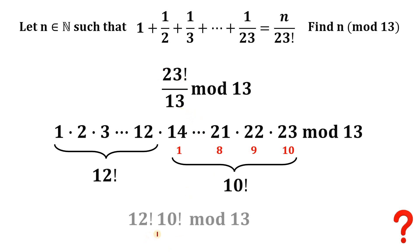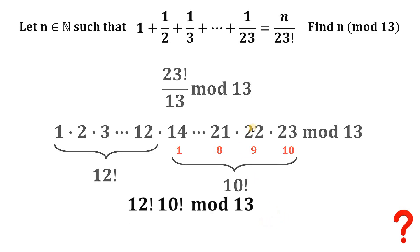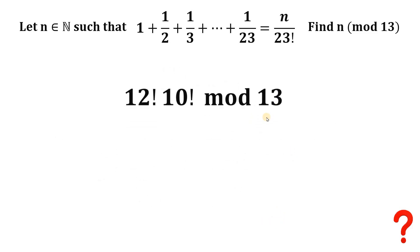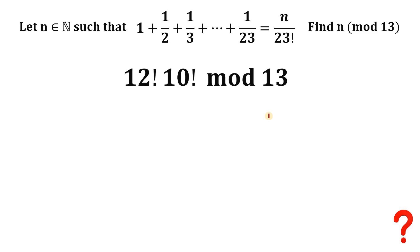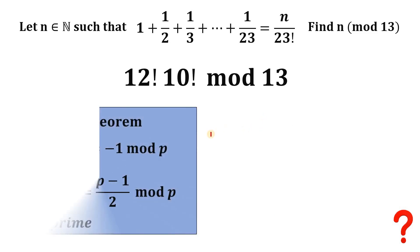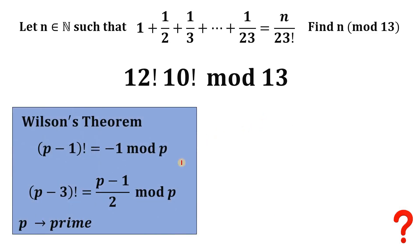So we can simplify 23 factorial over 13 as 12 factorial × 10 factorial, mod 13. From here we will use Wilson's theorem: if P is a prime number, then (P − 1)! is congruent to −1 mod P.